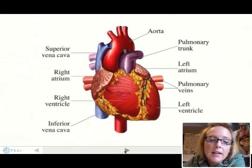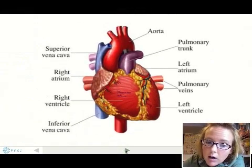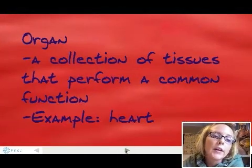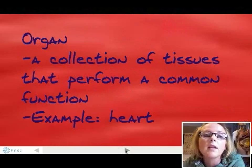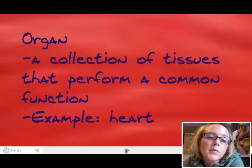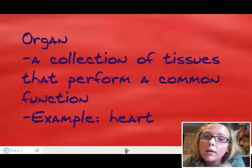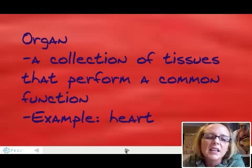Tissues are organized into organs. The heart is a great example of an organ. An organ is a collection of tissues that performs a common function. The function of your heart is to pump blood all over your body. Every other organ in your body has a function as well, and we'll go over those organs at a later date.